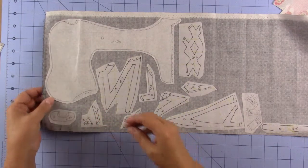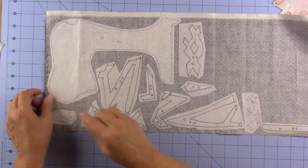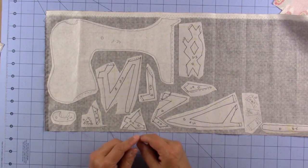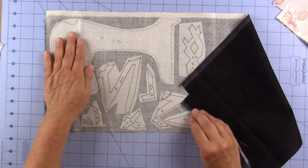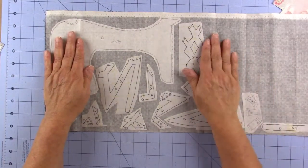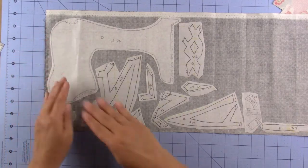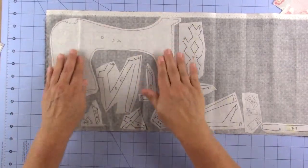Then you're going to pull the paper off of one side of the Steam-A-Seam, the side that is not traced, and you're going to place it on the back of the fabric so the wrong side of the fabric gets the untraced piece of the Steam-A-Seam. Just put them down and press them in place.